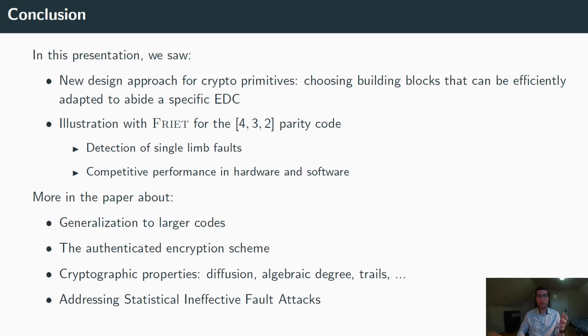What we did not discuss about, but you can find more about that in the paper, is how to generalize our approach to larger codes. We also did not talk much about the authenticated encryption scheme, but it is discussed more in the paper, as well as, for example, the cryptographic properties of the permutation, so diffusion, algebraic degree, but also linear and differential trails. In the paper we also explained how FRIT can be adapted in order to address statistical ineffective fault attacks.